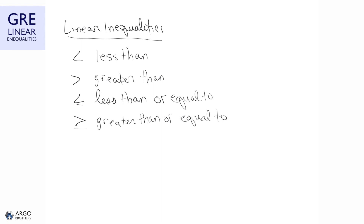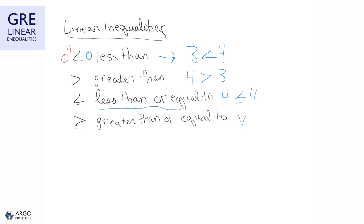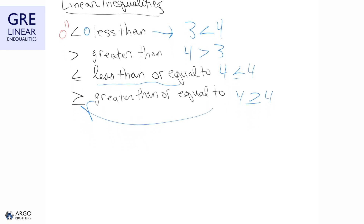Let's go over linear inequalities. Like equalities, there will be a left-hand side and a right-hand side, except there will not be an equal sign between them — there will be an inequality sign. The first is less than, meaning whatever number is on the left is less than the number on the right. The greater than sign is the same concept but reversed. Less than or equal to means the left side can be less than or equal to the right side.